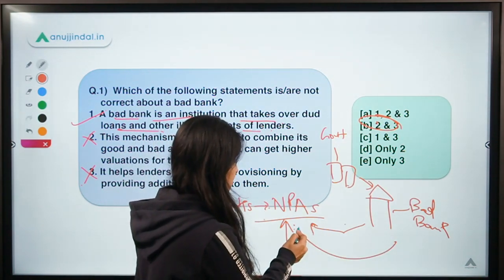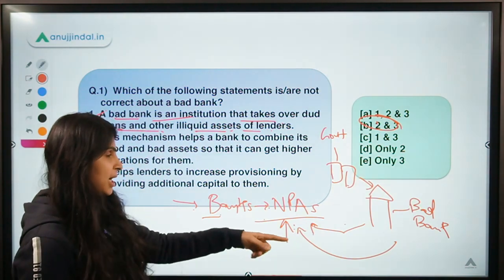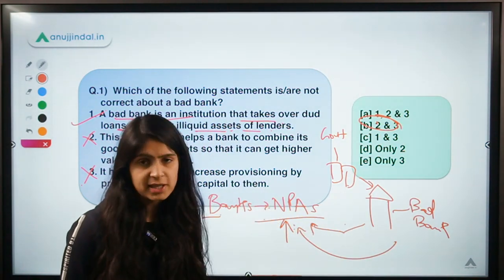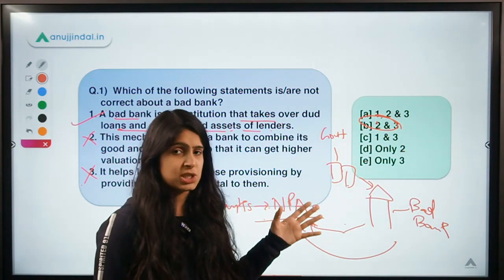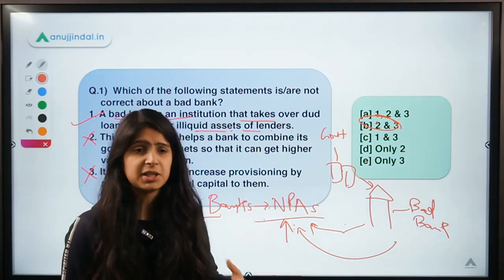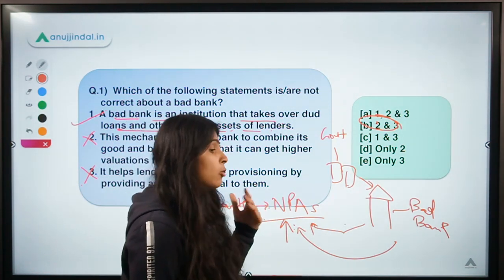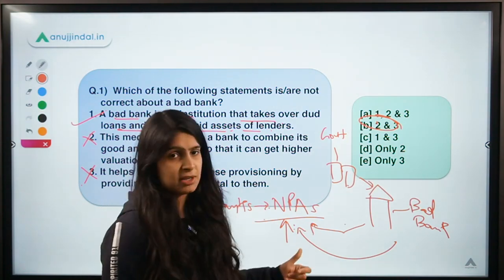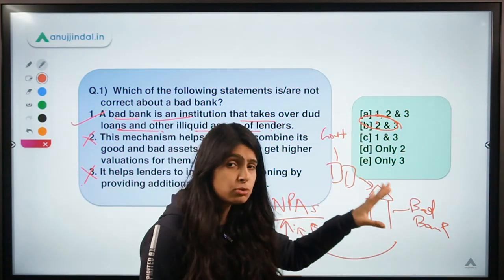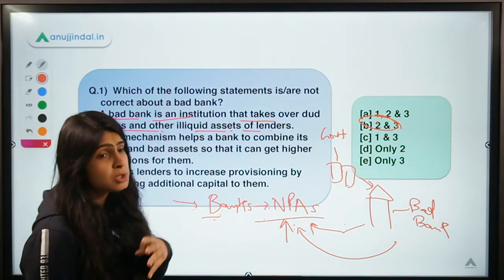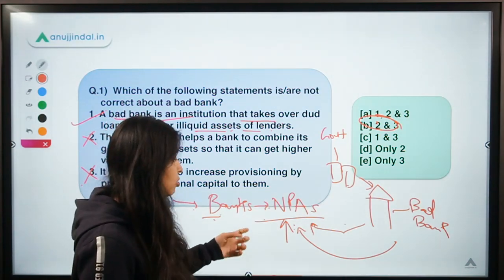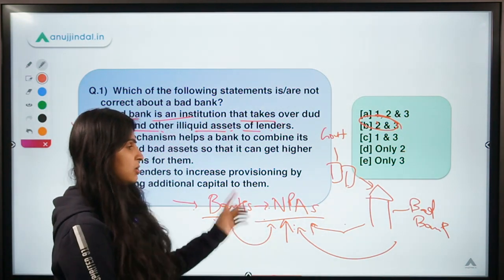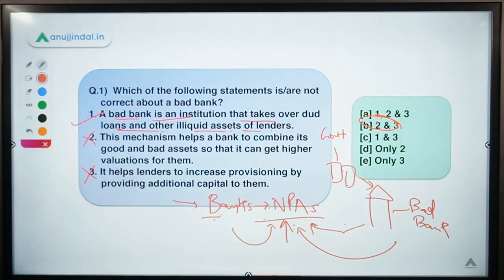You might be thinking that if a bad bank can do it, why can't a normal bank? Because a bad bank will have specialized staff who know how to pull value out of NPAs, or if a company is on the brink of bankruptcy, how to find buyers or investors for it in order to save that company. Regular banks have other functions, so they cannot invest a lot of time and effort in recovering value from NPAs. That is why the first statement is correct.